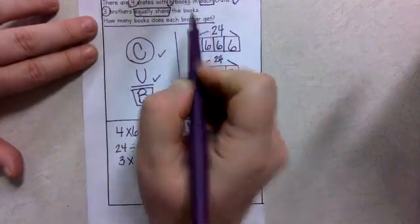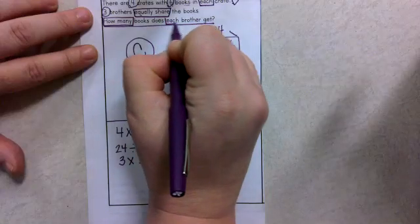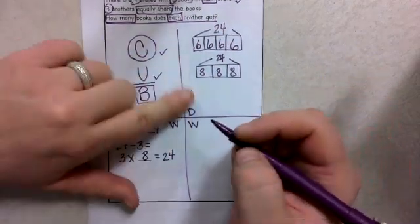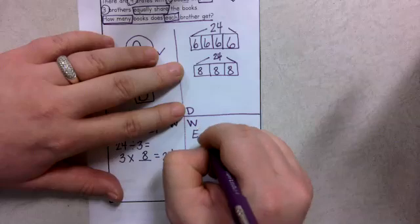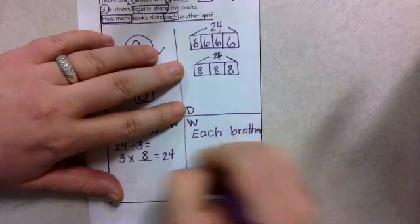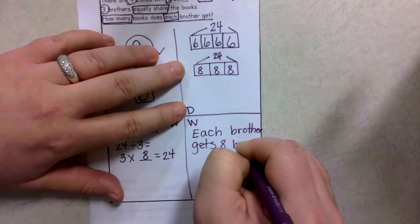Last, how many books does each brother get? Well, how many is a math word. And each. And I'm ready to do my statement. How many books does each brother get? Each brother gets 8 books.